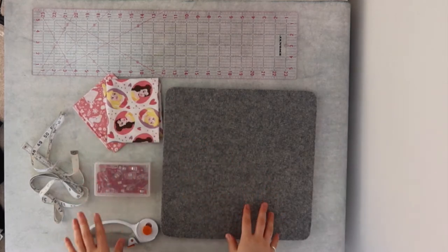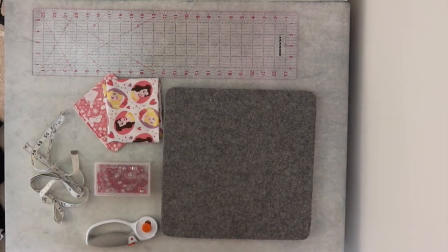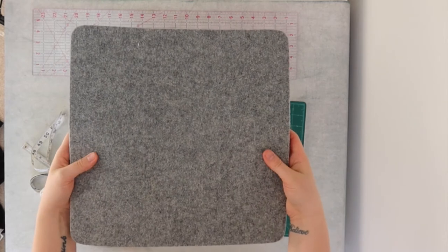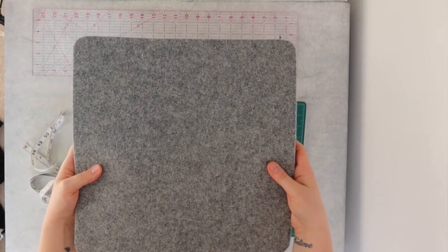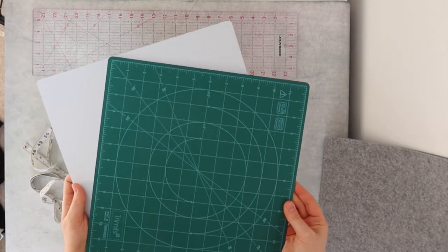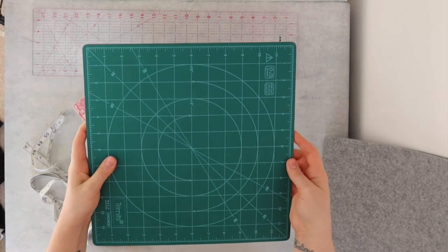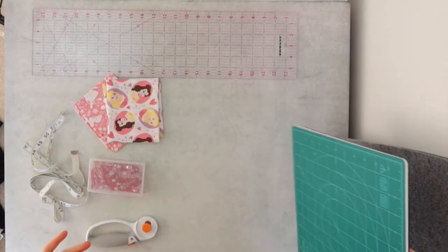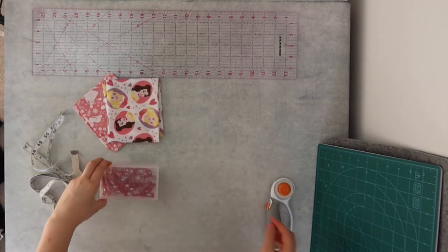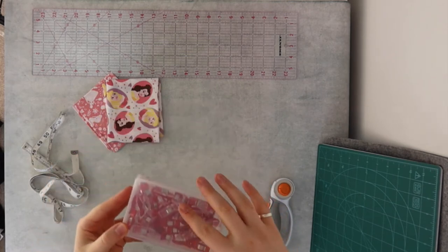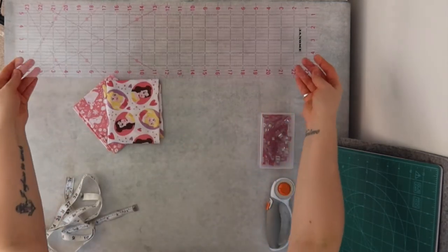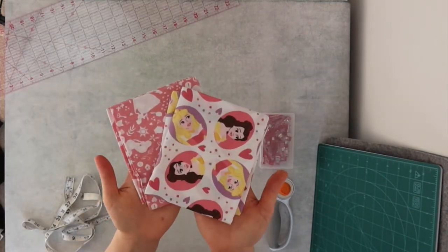Before we get started, I want to run through a few things you're going to need for this tutorial. One thing I have that's a little bit extra is an ironing mat, this is like a wool felt one. You don't need to use this, you can use your ironing board. I have my cutting board, this is a rotating one but you can use whatever you have available or you can just use scissors. I have my rotary cutter, clips or you can alternatively use pins, tape measure and my quilting ruler.